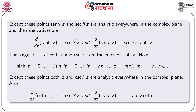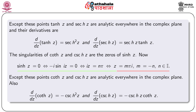The singularities of coth z and cosech z are the zeros of sinh z. We know sinh z = 0 if and only if -i sin(iz) = 0, if and only if iz = nπ, if and only if z = nπi where n is any integer. Therefore, except these points, coth z and cosech z are analytic everywhere in the complex plane, with derivatives -cosech²z and -cosech z · coth z respectively.